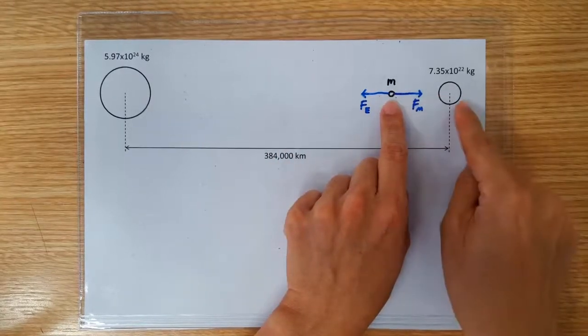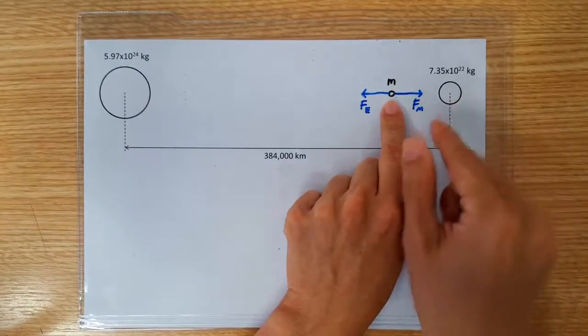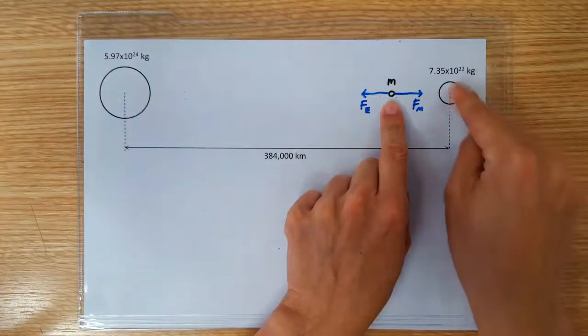By placing the mass closer to the Moon, it's possible for the Moon to exert a gravitational pull as strong as the Earth's, despite its smaller mass.